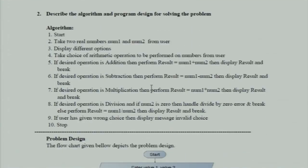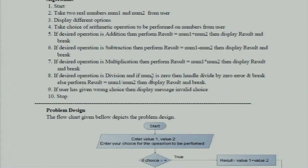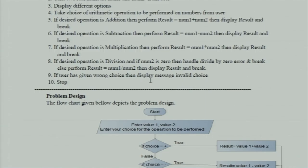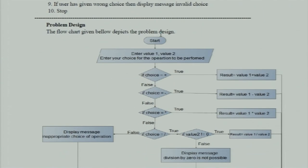The algorithm is written in text form: Start, take two real numbers (number one and number two) from the user, display different options, take the choice of arithmetic operation to perform. If the desired operation is addition, perform result = number1 + number2 and display result. Similarly for subtraction and multiplication. For division, if number two is zero, handle the divide-by-zero error — care has been taken that if the divisor is zero, we handle that case.